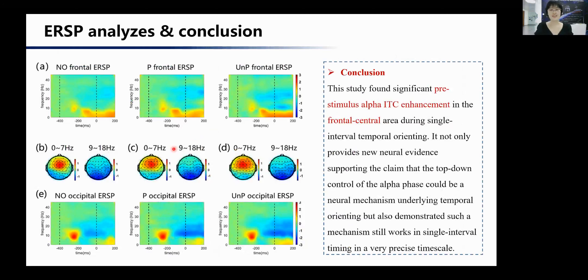Let's have a conclusion. This study found significant pre-stimulus alpha ITC enhancement in the frontal central area during single interval temporal orienting. It not only provides new neural evidence supporting the claim that top-down control of the alpha phase could be a neural mechanism underlying temporal orienting, but also demonstrated such a mechanism still works in single interval timing in a very precise time scale.